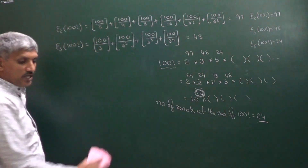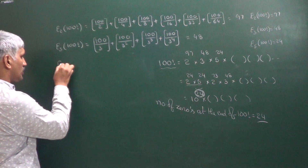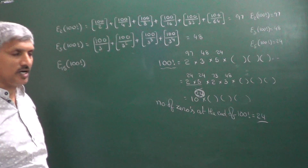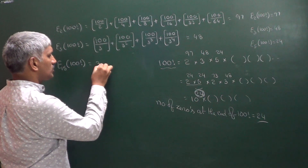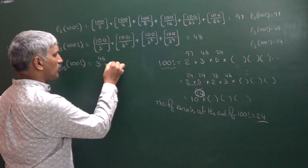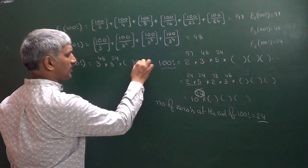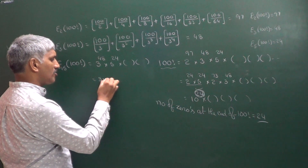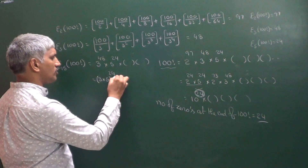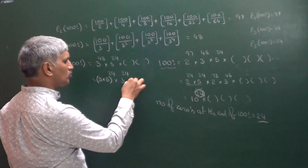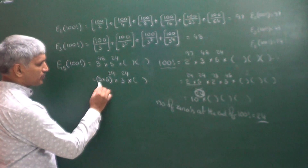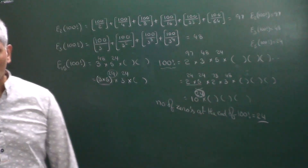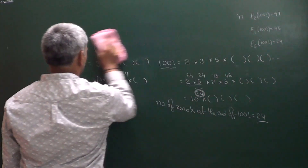Another question: what is the exponent of 15 in 100 factorial? Since 15 is not prime, we use the factorization. We know 100 factorial contains 3⁴⁸ × 5²⁴ × (other numbers). Since 15 = 3 × 5, we can write this as (3×5)²⁴ × 3²⁴ × (other numbers) = 15²⁴ × (other numbers). So the exponent of 15 in 100 factorial is equal to 24.